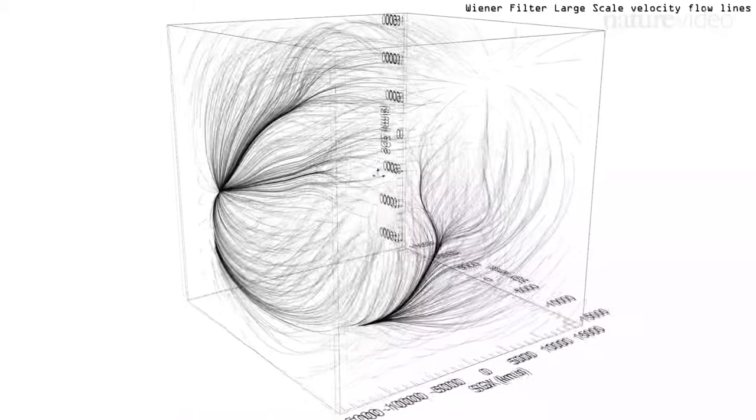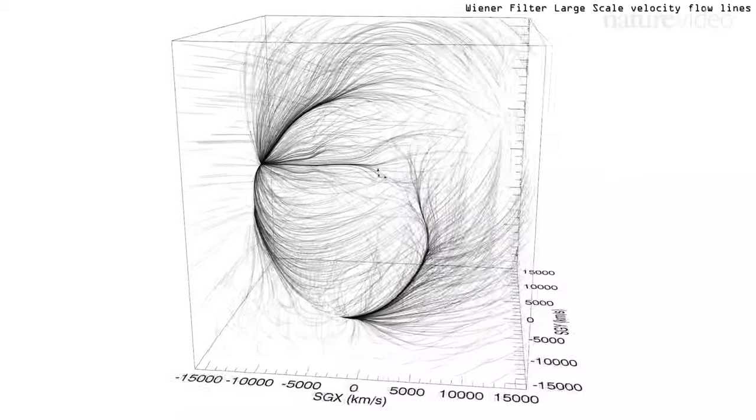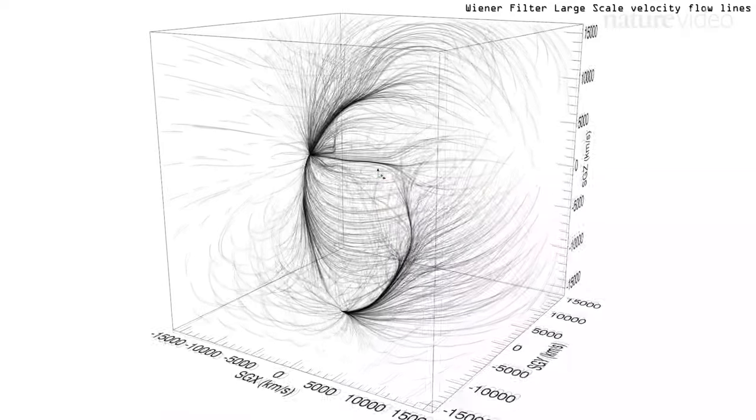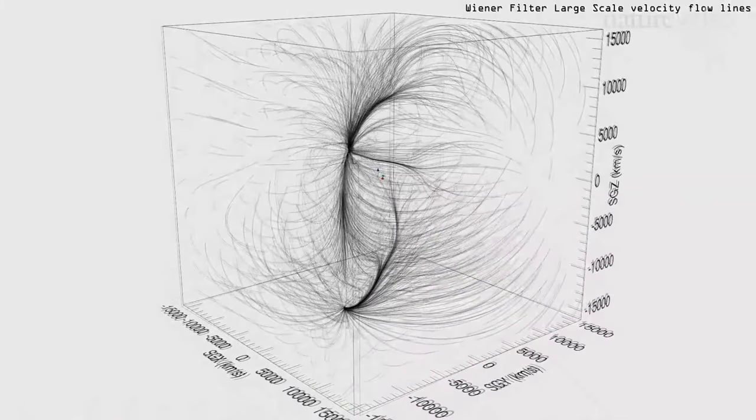The astronomers who made this discovery have named the new supercluster Laniakea, a name for immeasurable heaven.